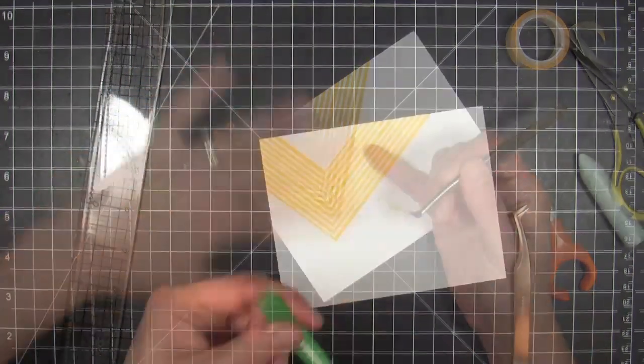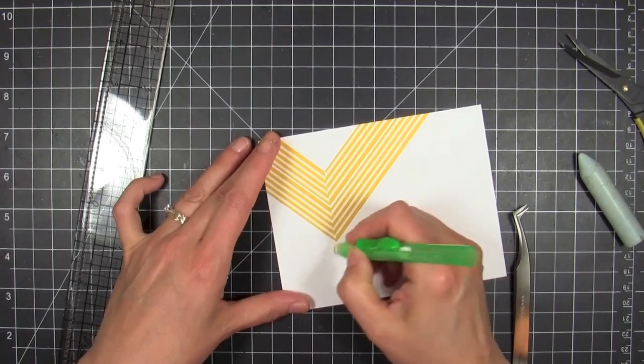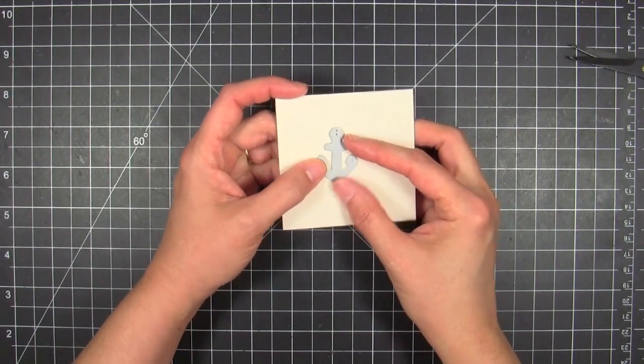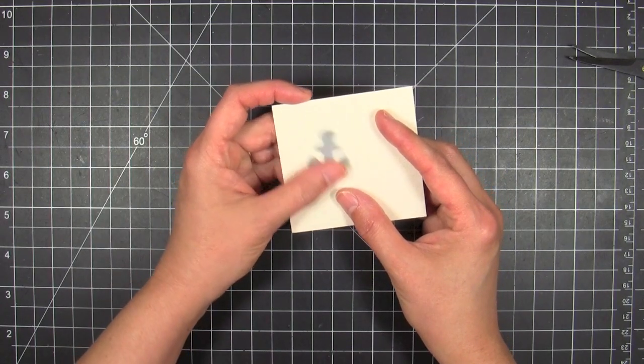You could do this with actual paper too if you want, but it's not quite as fast and easy because the cardstock isn't going to be repositionable like the washi tape is.